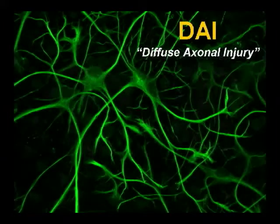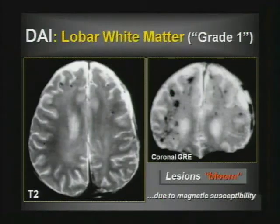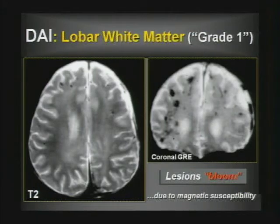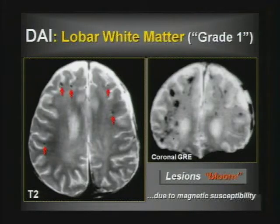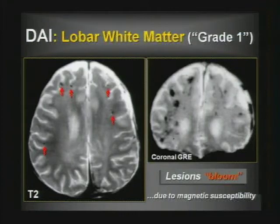Shearing injury refers to rotational injury to the brain, not a strict front-back impact. It's graded into three types. Grade 1 is the most common, involving the lobar white matter — seen as little black dots of ferritin and hemosiderin-laden macrophages in the white matter on T2-weighted imaging. Grade 2 involves the corpus callosum — these patients are more severely injured. Susceptibility-weighted imaging (SWI), a gradient echo on steroids, is particularly sensitive to magnetic susceptibility and detects hemorrhagic axonal injury.